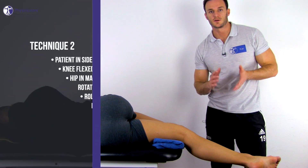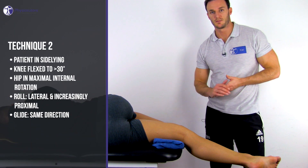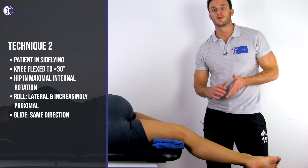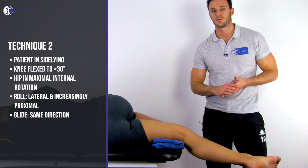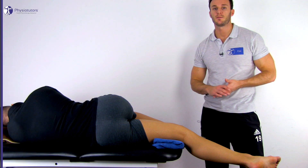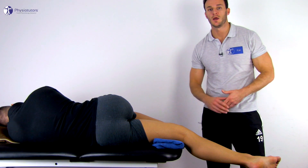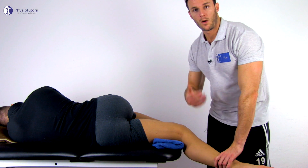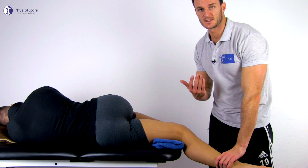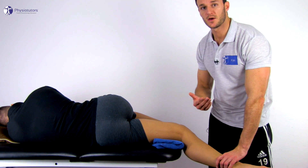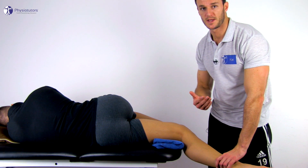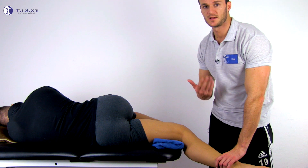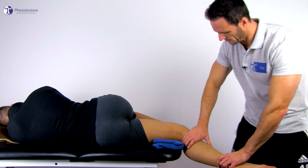If you want to increase the stress on the medial ventral capsule, you can create pretension on the ventral part of the capsule by flexing the knee more than 30 degrees. While the technique is the same, you will first have to internally rotate the patient's hip maximally until you can roll and glide the tibia.